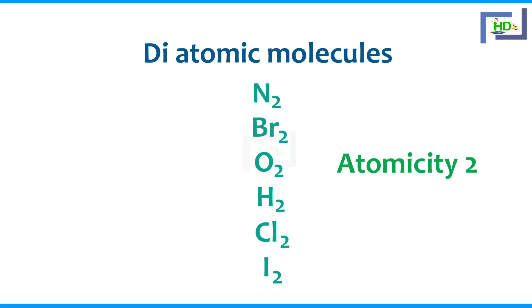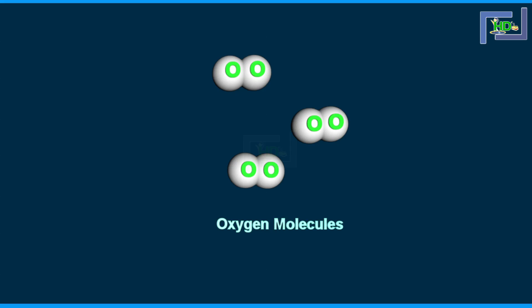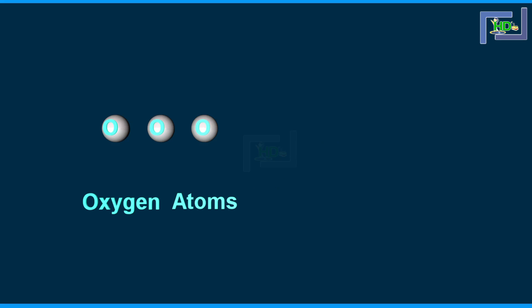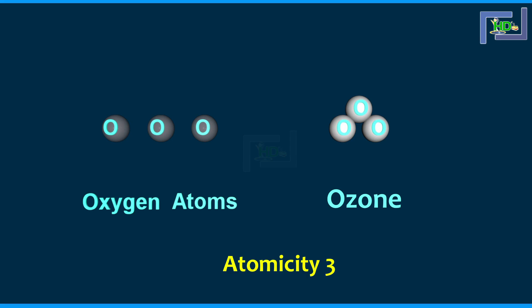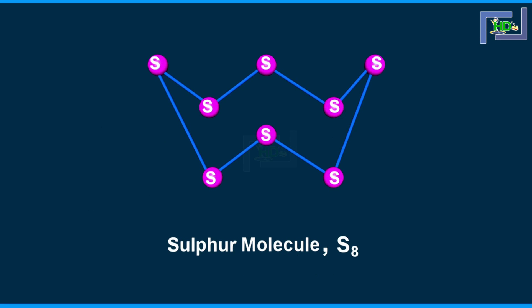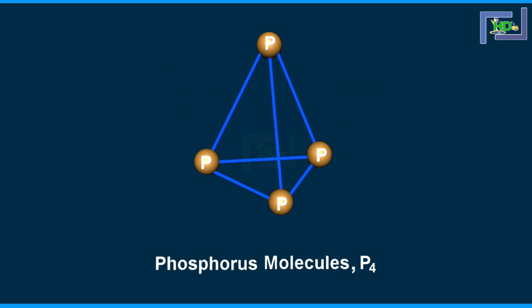Atomicity means the number of atoms present in a molecule of an element. For example, oxygen molecule contains two atoms, hence its atomicity is two. Ozone contains three atoms, its atomicity is three — ozone is a triatomic molecule. Sulphur has the formula S8, meaning the sulphur molecule contains eight atoms, so its atomicity is eight. Phosphorus is P4, it contains four atoms, hence the atomicity is four.